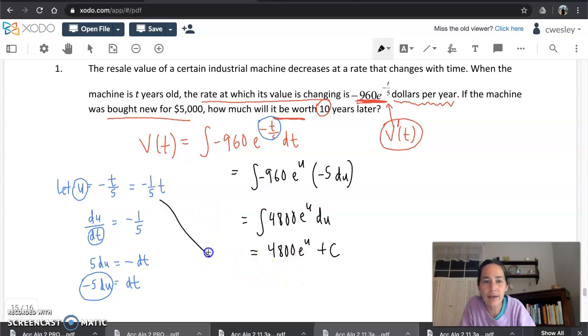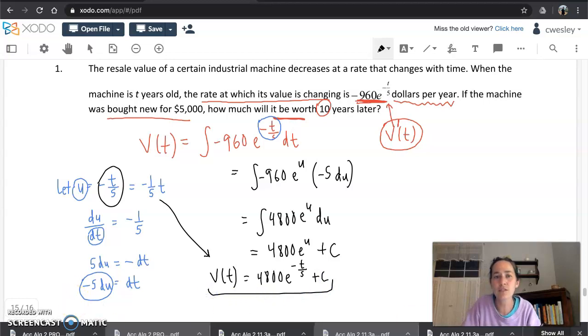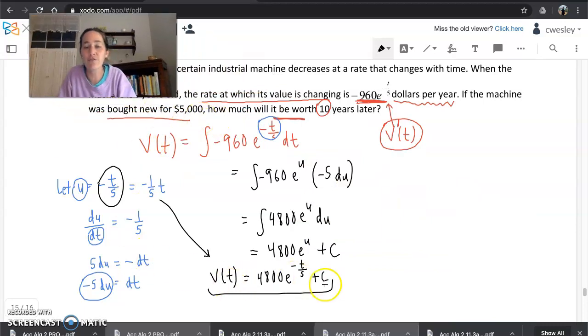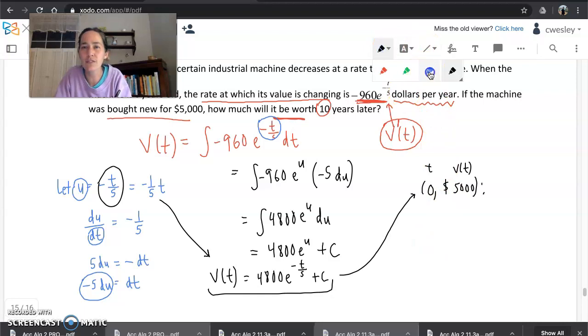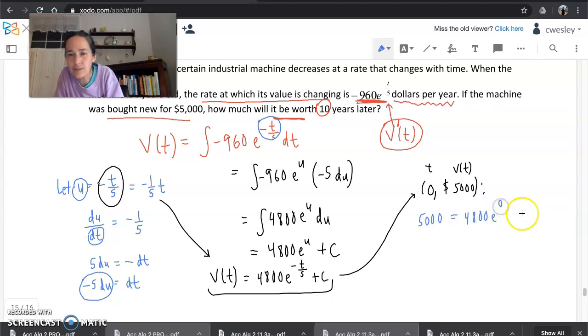Here comes the plus c. And we can plug back in. We want v of t to equal 4800 e to the... Let's call it negative t over 5. Negative t over 5 plus c. And we're not finished. We got a little bit more to do. So with this space over to the side, check out the other wording. The machine was bought new for 5,000. That is your initial condition. When the machine was zero years old, it cost or it was valued at $5,000. So that's a plug-in for us. We can plug in zero for t. And we can plug in 5,000 for the value of v of t. So go ahead and do that. Let's solve for c so we can get the solution. 5,000 equals 4800 e to the zero, right? Zero over five plus c. I know anything to the zero power is 1. So 4800 plus c. And then you subtract. You should just get 200. c equals 200.